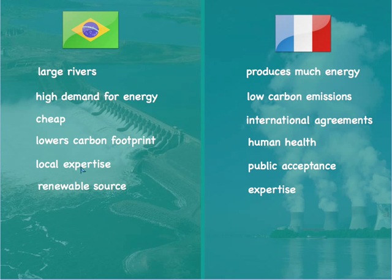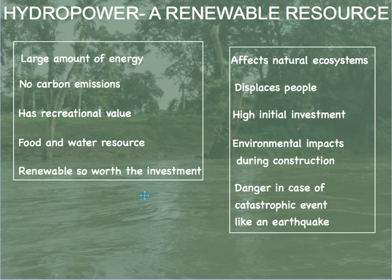Brazil has developed a lot of expertise with its large network of dams, and of course there is no end in sight for this renewable source of energy. France, on the other hand, produces a lot of nuclear energy — excellent for maintaining the clean air which is in high demand by its population. It helps the country meet international agreements like the Kyoto Protocol, which limits carbon emissions. It has obvious health benefits and wide public acceptance, and France has a long history of using nuclear energy, having developed a lot of expertise in this area.